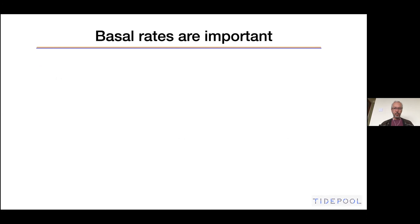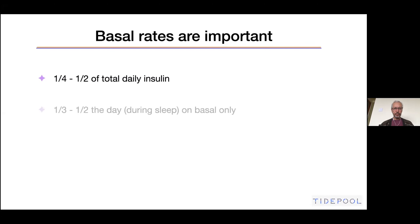Basal rates are very important for the following reasons. They make up actually a quarter to half of total daily insulin. Most people will say basal insulin is about half of your daily insulin, but it can certainly be a lot less than that in children. About a third to half the day during sleep, the body is just running on basal rate only. So if we can actually figure out and optimize the basal rate for someone, that's winning half the battle — because half of the day they're just on basal rate insulin.